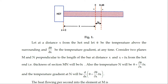Consider two planes M and N perpendicular to the length of the bar, at distances x and x + δx from the hot end. The thickness of section MN will be δx. Plane M is at distance x from the origin and plane N is at distance x + δx.